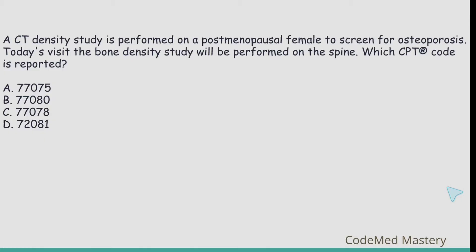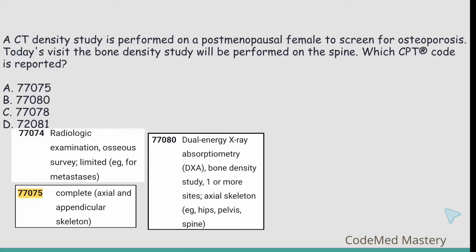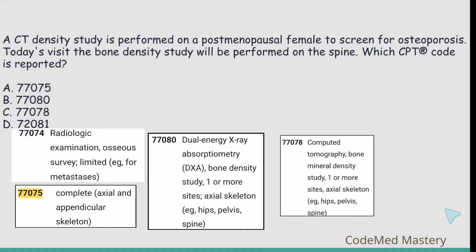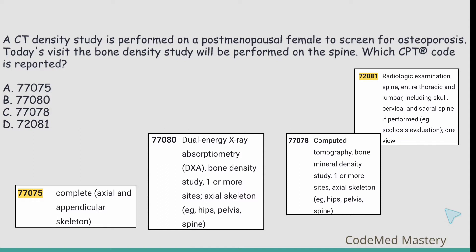The bone density study will be performed on the spine. What CPT code is reported? Let's check the options. Option A: 77075, which is for radiologic examination or skeletal survey, complete, axial and appendicular skeleton. 77080 is for dual energy x-ray absorptiometry bone density study, one or more sites, axial skeleton — example: hips, pelvis, and spine. Option C: 77078 is for computed tomography bone mineral density study, one or more sites, axial skeleton — example: hips, pelvis, and spine.